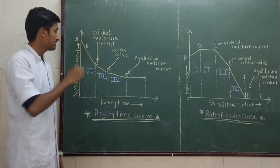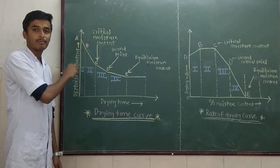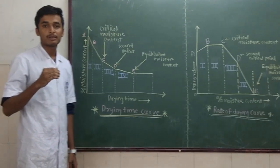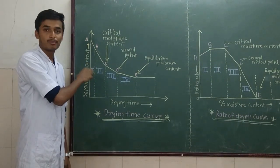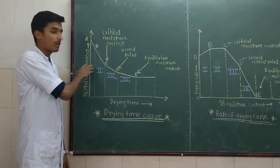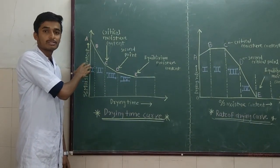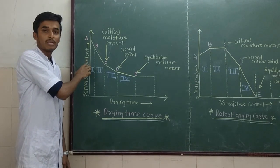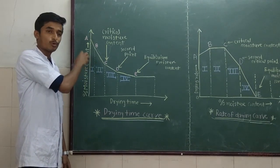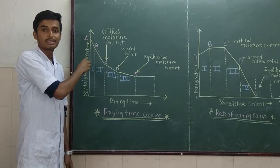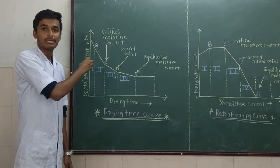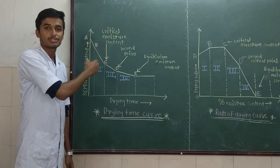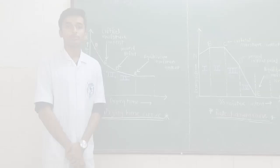In this case, we consider the wet bulb temperature. Why do we take the wet bulb temperature? Because here we are considering the moisture. At the wet bulb temperature, the temperature of the wet solid is maintained, because only that much temperature is absorbed by the solid as is required for surface evaporation.